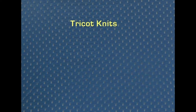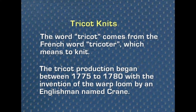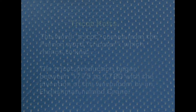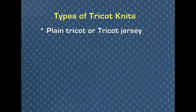The word tricot comes from the French word 'tricoter', which means to knit. Tricot production began between 1775 to 1780 with the invention of the warp loom by an Englishman named Crane. The machine has one or more warp beams mounted above it. The first type is plain tricot or tricot jersey, which is the basic fabric using a two-bar construction and is used for the widest range of applications.